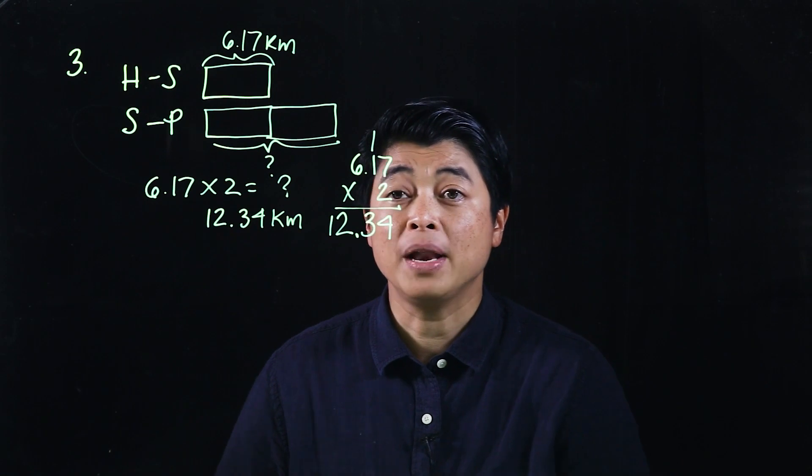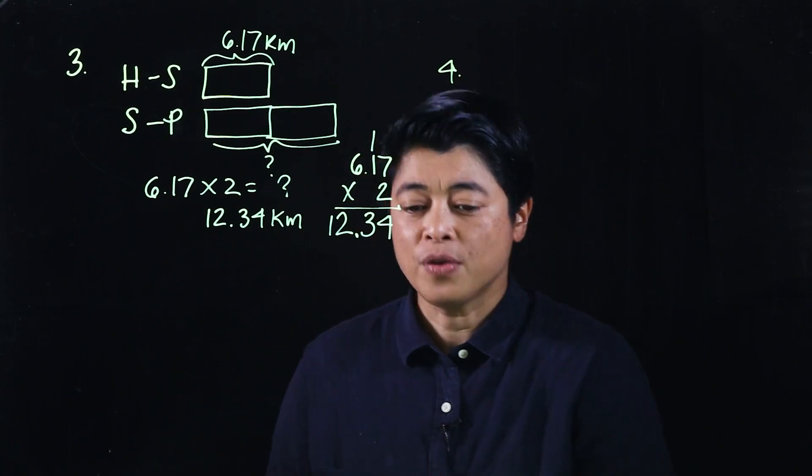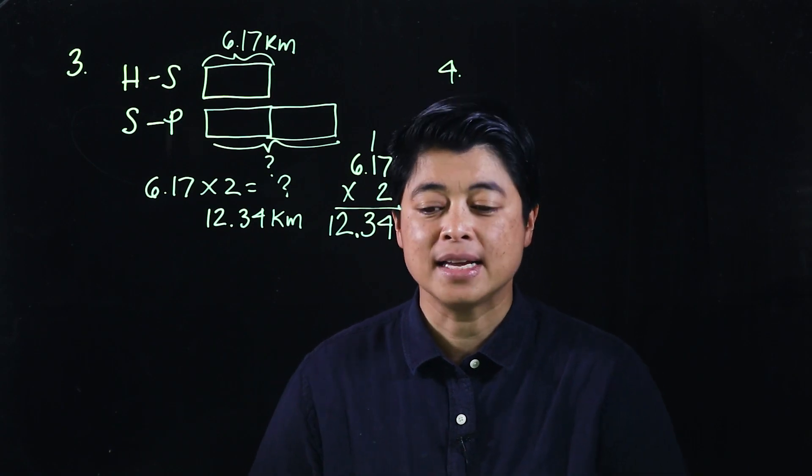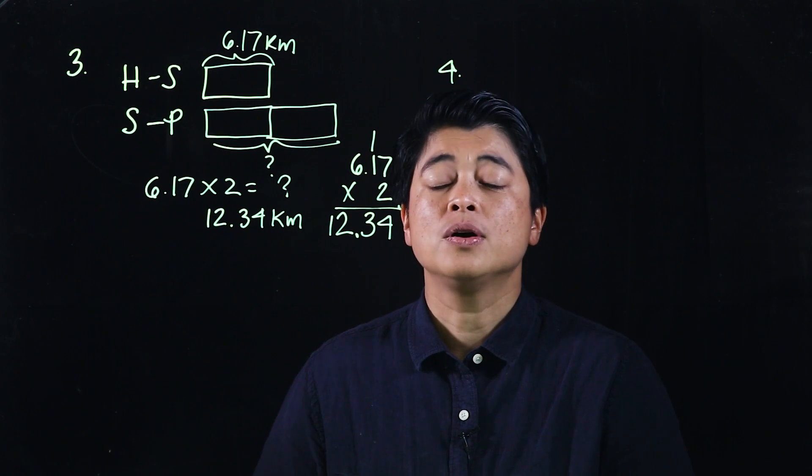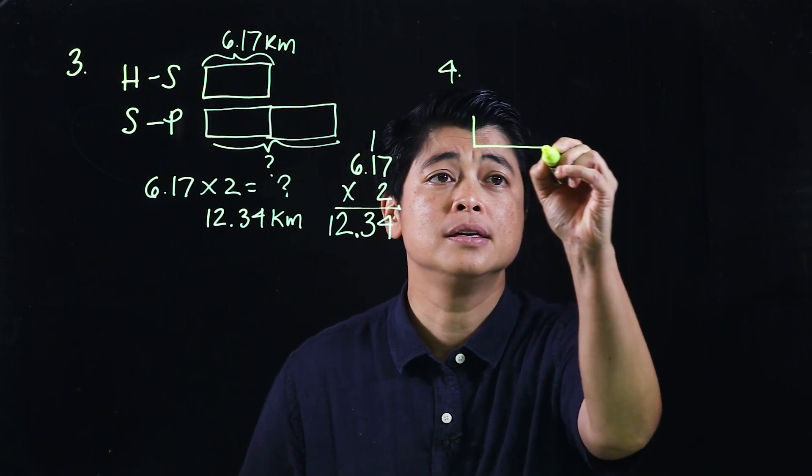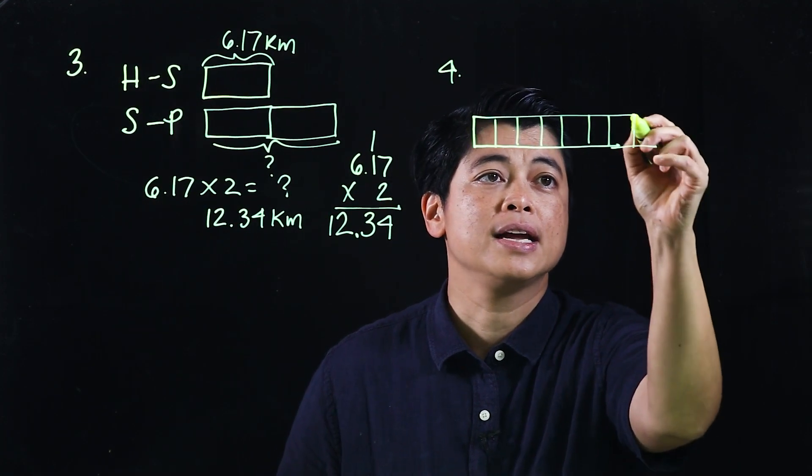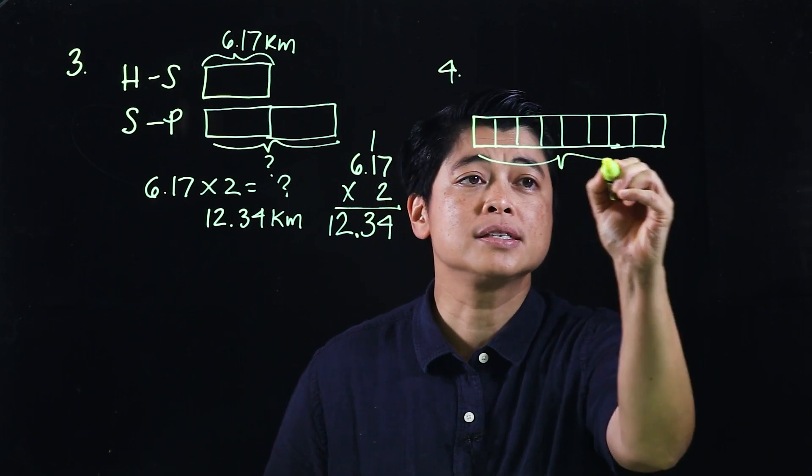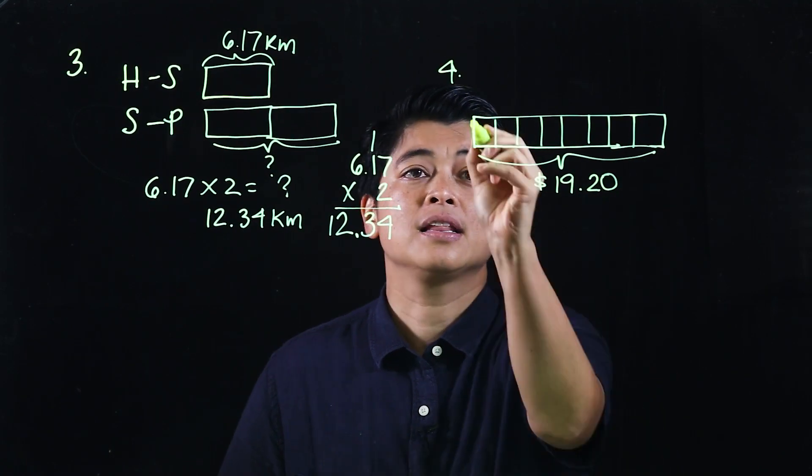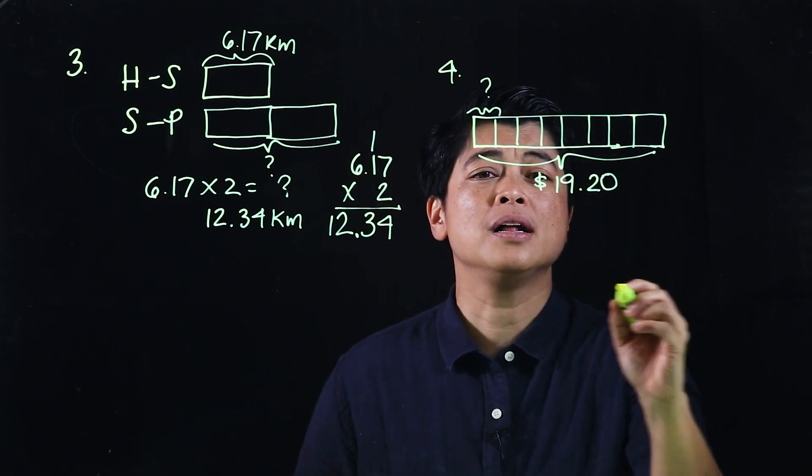Let's try another problem, which is problem number four on the same page. Problem number four says: 8 similar packets of chocolate cost 19 dollars and 20 cents. Find the cost of 1 packet of chocolate. We can do a bar model: 1, 2, 3, 4, 5, 6, 7, 8. Eight packets cost 19 dollars and 20 cents, and the question is: what is the cost of each?